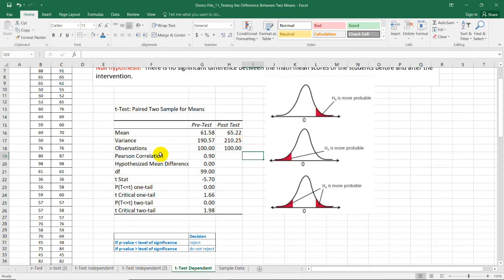Looking at this summary table, we can see that the post-test has a higher mean which is 65.22. We can say that the scores of the students increase after the intervention program. But is this significant?